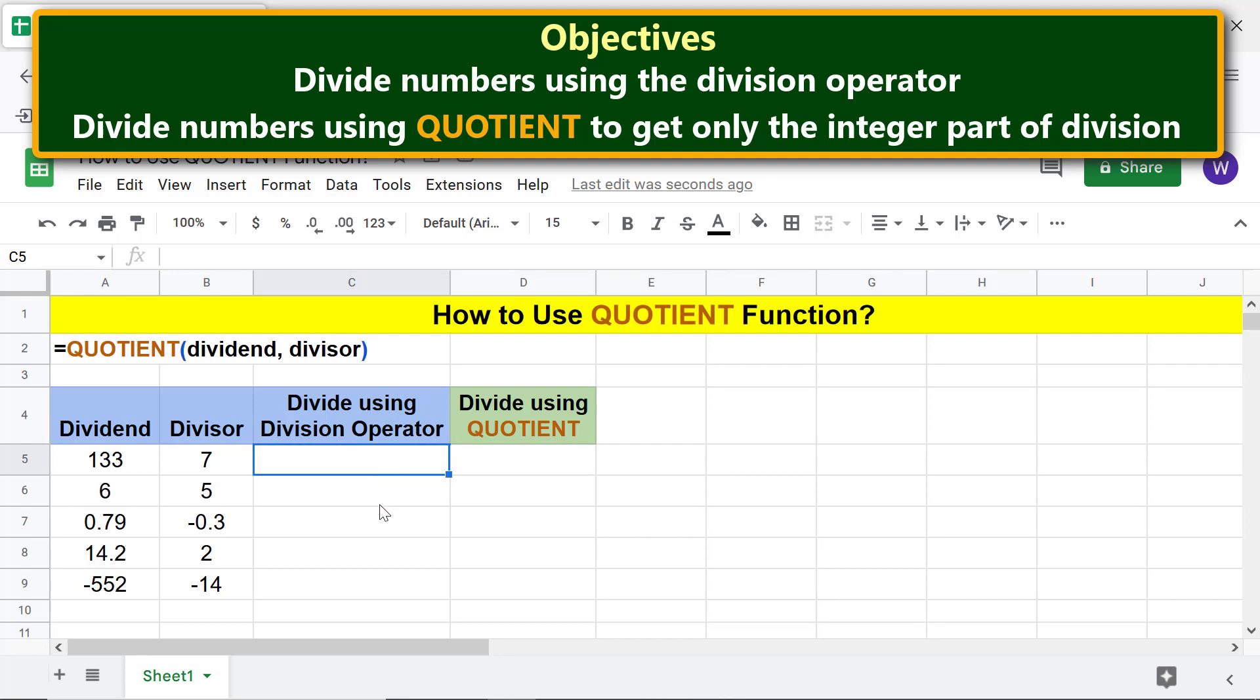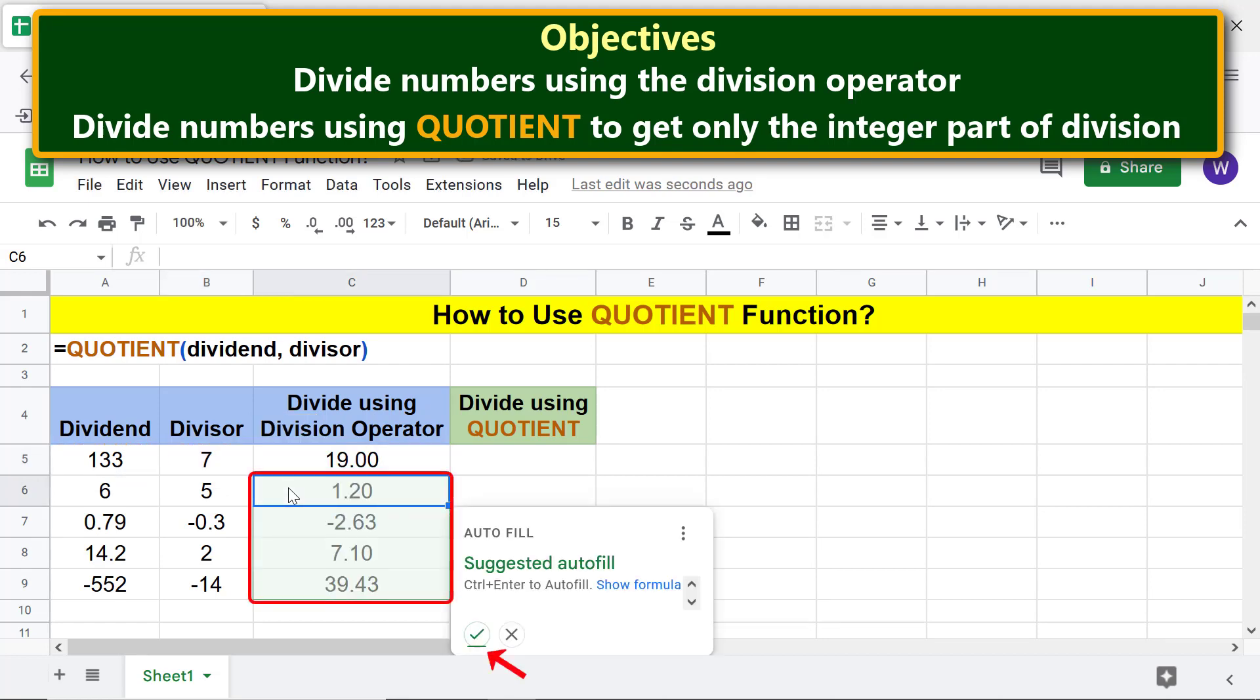Type the equal to symbol. For dividend, click this cell. Type the division operator. For divisor, click this cell. Press Enter. Click the tick mark to auto-fill these cells with the formula.